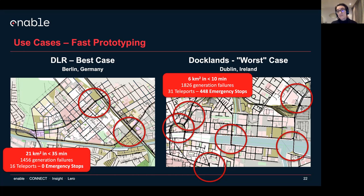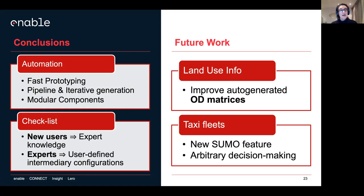If you need to do a feasibility study to know whether you should even try this scenario, you can have it in 10 minutes. To conclude, with Saga there is better automation, you can use it for fast prototyping, it provides pipeline and iterative generation, and it's built upon modular components. It provides a checklist so that if you're a new user, you're practically buying expert knowledge. And if you're an expert, you can have user-defined intermediary configuration files that let you do whatever you want with them.